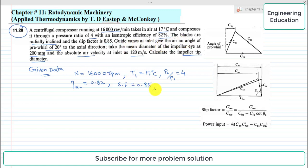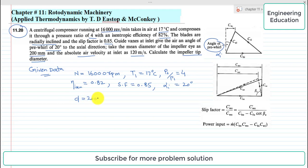The angle of pre-whirl, represented by alpha_i, is 20°, as shown in the velocity triangle at inlet. The mean diameter of the impeller, represented by small d, is 200 mm or 0.2 m. The absolute velocity of air at inlet, CAI, is 120 m/s.